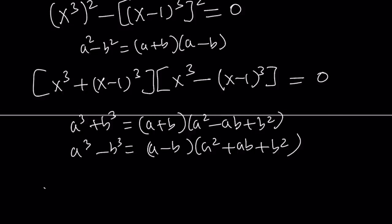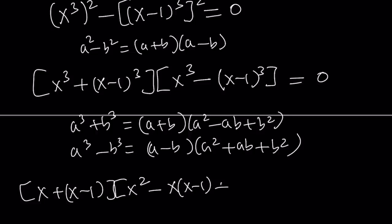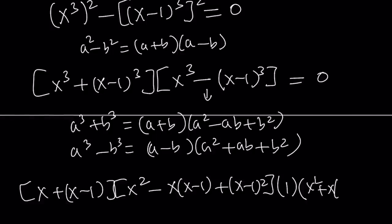The first one will be factored as x plus x minus 1, multiplied by x squared minus x times x minus 1 plus x minus 1 squared. And then the second one can be factored as x minus x minus 1 — the difference between those two things is 1, so we can just write it as 1 — times x squared plus x times x minus 1 plus x minus 1 squared.